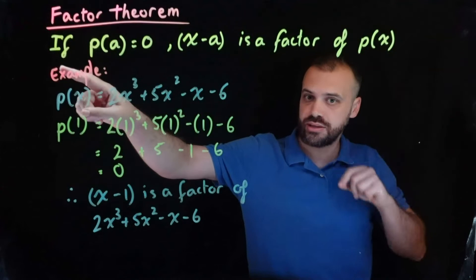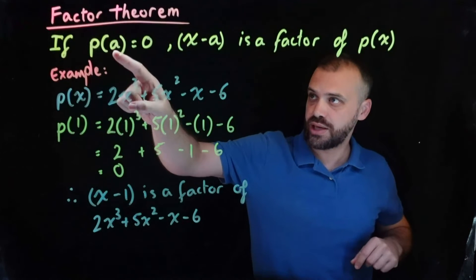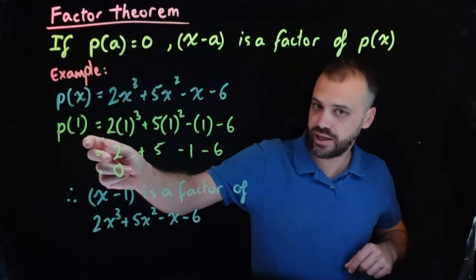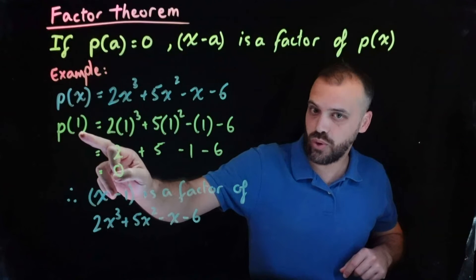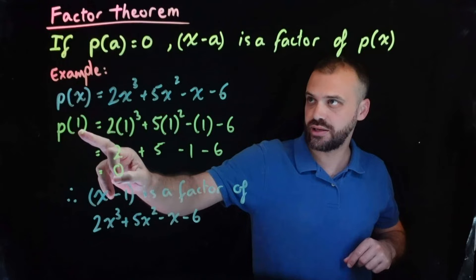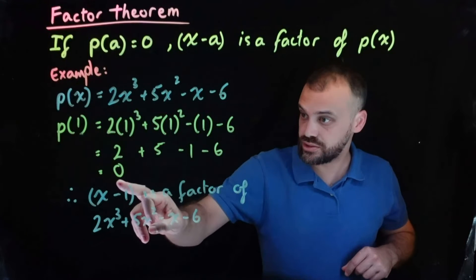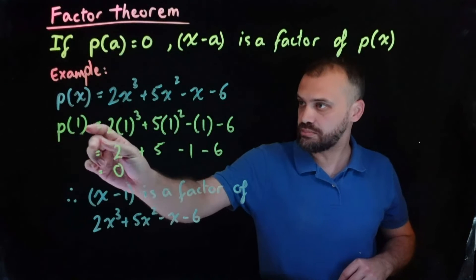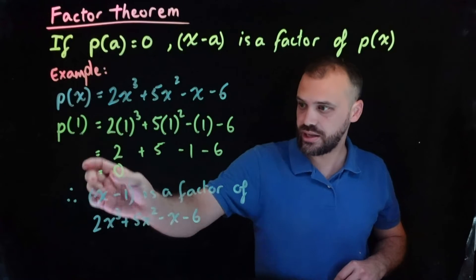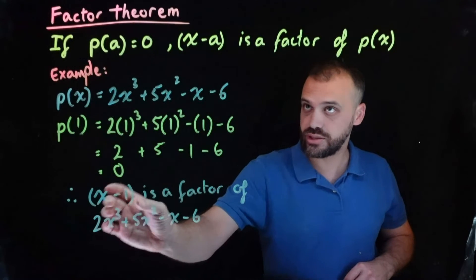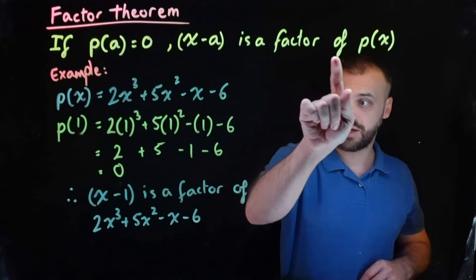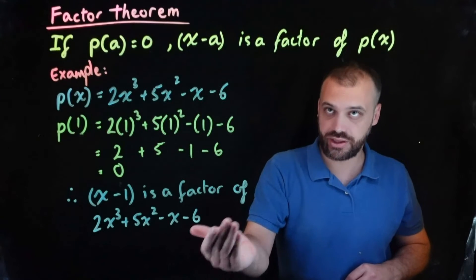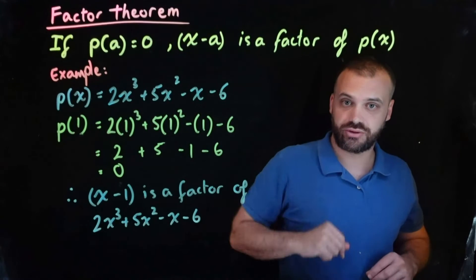So this statement here: if p of a is equal to 0 — in our case, we put 1 in for a and it's equal to 0 — then x minus a, x minus 1, is a factor of p of x.